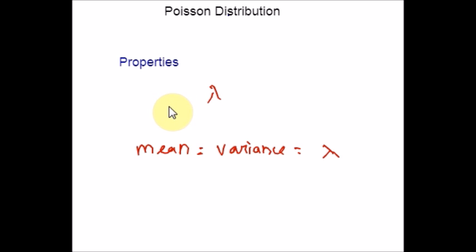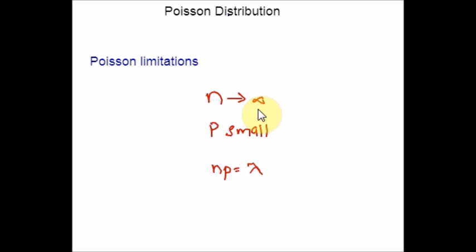Now, let us see the conditions for Poisson distribution. Poisson distribution is the limiting case of the binomial distribution under certain assumptions. Let me give you the assumptions. Here are the list of limitations for a Poisson distribution to become a binomial.